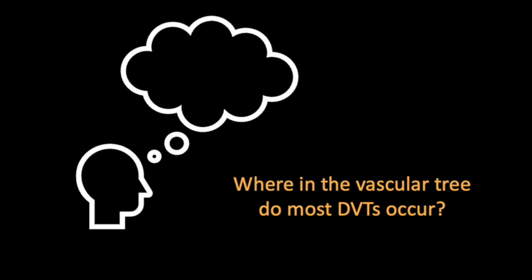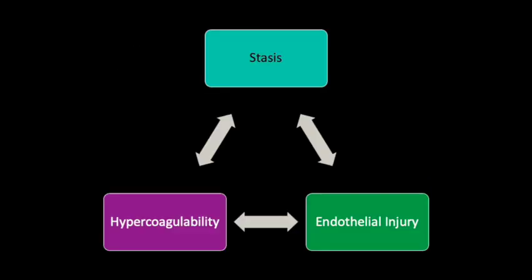As we start to think about locating DVTs, consider where in the vascular tree most DVTs occur. Virchow's triad links clot formation with three interrelated factors. First, the intrinsic propensity for the blood to clot based on genetic, cellular, or biochemical properties — referred to as the blood's coagulability. Conditions such as antiphospholipid syndrome, factor V Leiden, or protein C or S deficiency predispose patients to developing thrombi. Those factors are not as easily altered as the other two, which we'll focus on today.